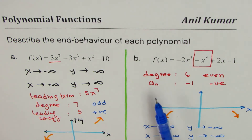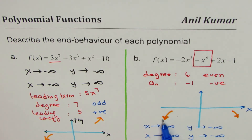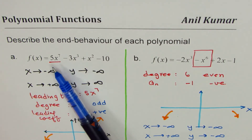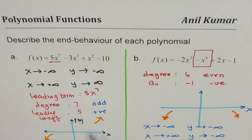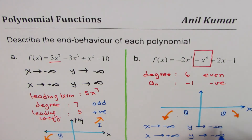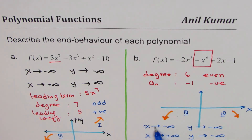To summarize: if the leading coefficient is negative, the right side is down; if the degree is even, both ends are the same. If the leading coefficient is positive, the right side is up; if the degree is odd, they are at opposite ends. In case A, the graph moves from quadrant three to quadrant one. In case B, it moves from quadrant three to quadrant four. I'm Anil Kumar — you can always share and subscribe to my videos. Thank you and all the best.